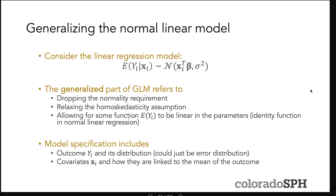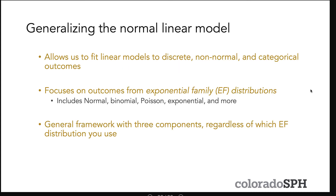Luckily, we can generalize the normal linear model to allow regression for outcomes that are not normal or continuous. This is where Generalized Linear Models, or GLMs, come in. The generalized part of GLM refers to dropping the normality requirement, relaxing the homoscedasticity assumption, and allowing some function of E[Y] to be linear in the parameters X-beta. Model specification for GLMs includes specifying the outcome distribution for Yi, as well as how covariates relate to the mean of the outcome. GLMs give us everything we need to fit models to discrete, non-normal, and categorical outcomes. We focus on outcomes from exponential family distributions, which include normal, binomial, Poisson, and exponential distributions, among others. We'll talk about exponential family distributions and their role in the GLM framework in the next lecture.